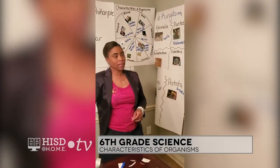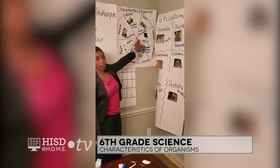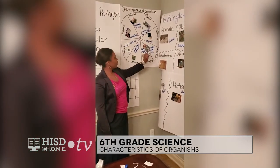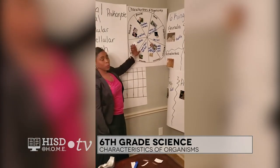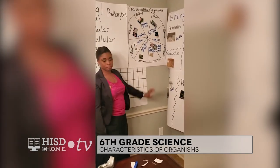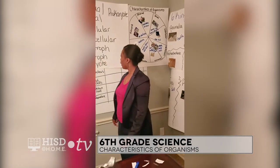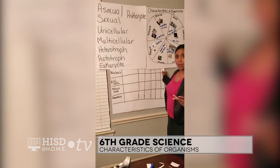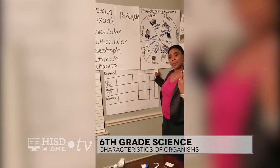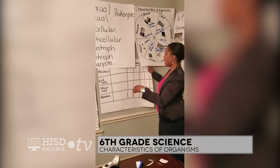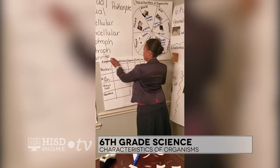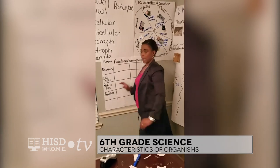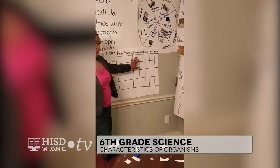So we just discussed the characteristics of organisms: asexual, sexual, unicellular, multicellular, heterotrophs, autotrophs, eukaryotes, and prokaryotes. Now we are going to combine it all — we discussed our kingdoms, we discussed our characteristics of our organisms, and then we're going to discuss how all four components identify our characteristics in our kingdoms.